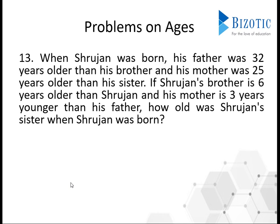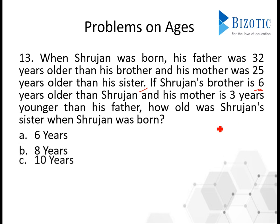Next problem: when Shrugan was born, his father was 32 years older than his brother, and his mother was 25 years older than his sister. Shrugan's brother is 6 years older than Shrugan, and his mother is 3 years younger than his father. How old was Shrugan's sister when Shrugan was born? There are four options.